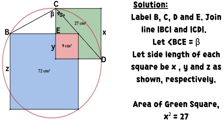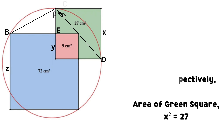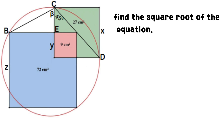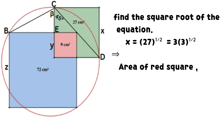Area of green square: x² = 27. Find the square root of the equation so that x = 3√3.